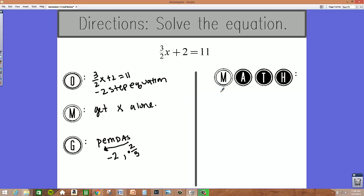So now let's go through and solve the problem. 3 halves x plus 2 equals 11. First step is to subtract 2 from both sides. 2 minus 2 is 0, so those cancel.